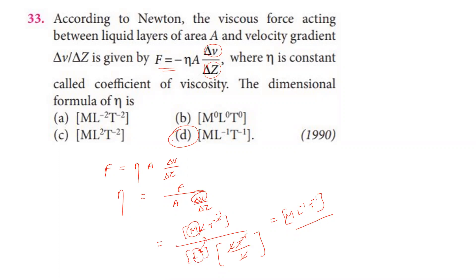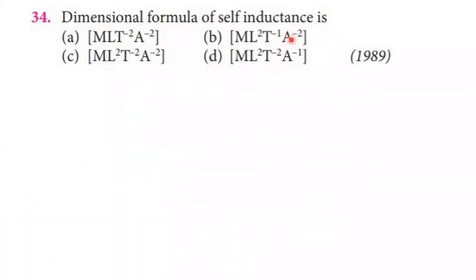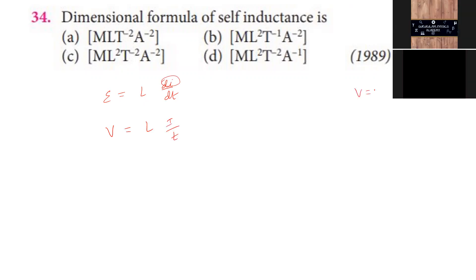Next question: dimension formula of self-inductance (coefficient of self-inductance). The time constant is L/R. EMF equals L times di/dt. EMF is potential difference, and potential equals work done divided by charge.